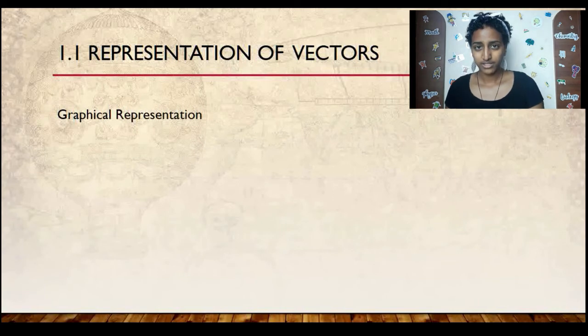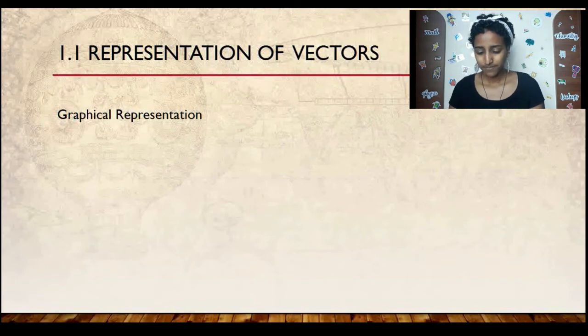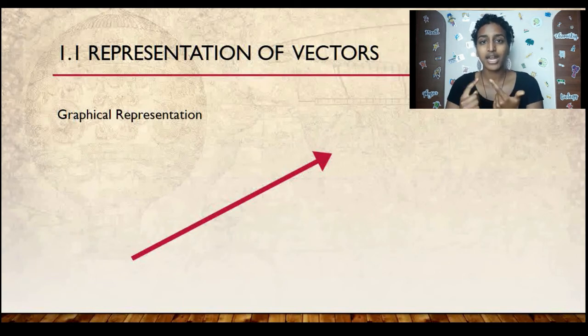Now, in order to represent a vector, you have two methods that you can choose from, either a graphical representation or a symbolic representation. Starting with a graphical representation, it must be probably the most efficient way to describe a vector. What is this method? Using an arrow. Now, why I say this is the most efficient way is because in order to describe a vector, we have to go through those key points, having a magnitude and having a direction.